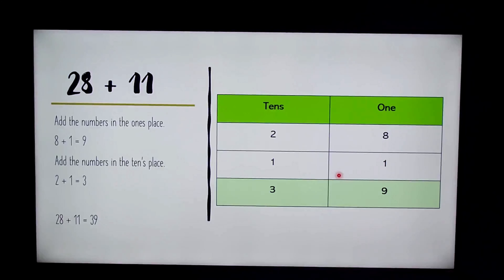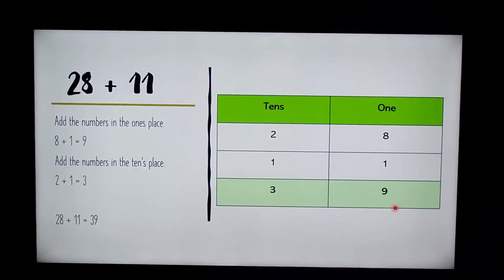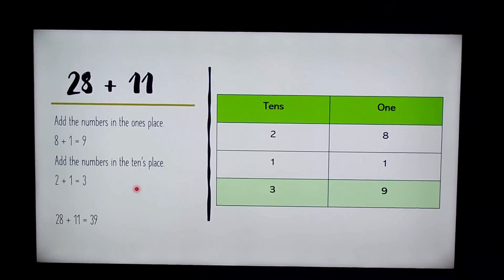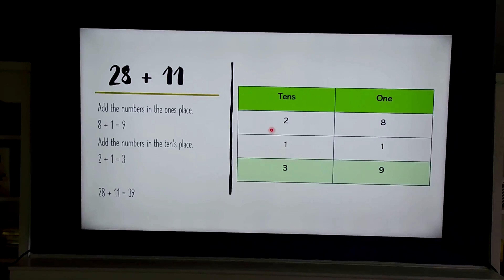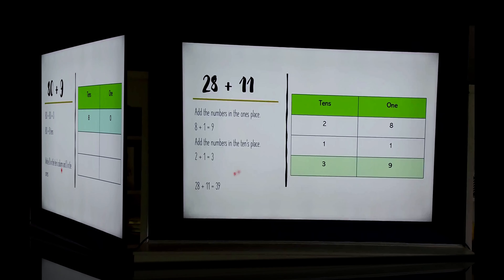Next we add the numbers in the ones place first — eight plus one equals nine. Then we add the numbers in the tens place — two plus one equals three. So 28 plus 11 equals 39.